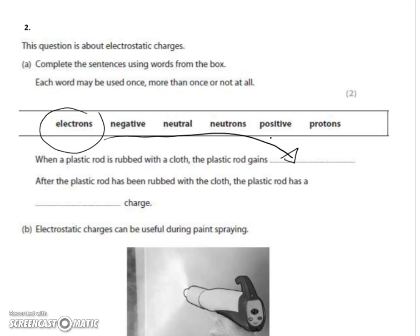After the plastic rod has been rubbed with the cloth, the plastic rod has gained electrons, so it will have a negative charge. So: when a plastic rod is rubbed with a cloth, the plastic rod gains electrons, and after it has been rubbed with the cloth, the plastic rod has a negative charge.